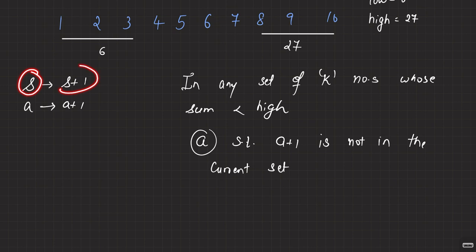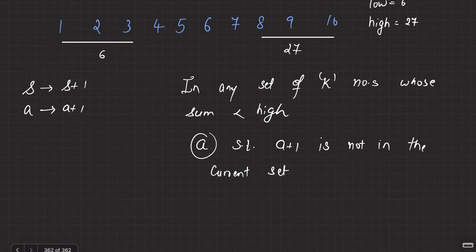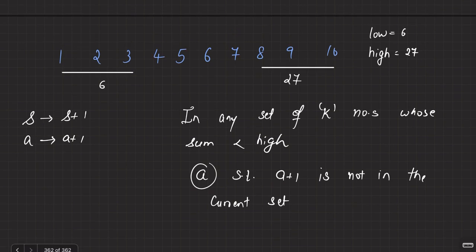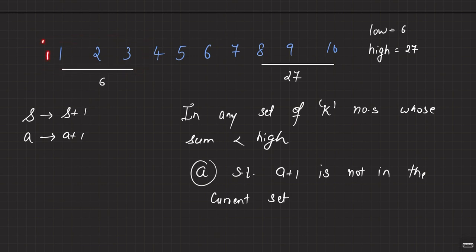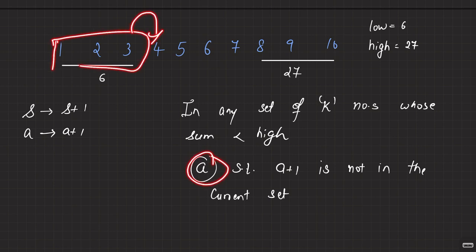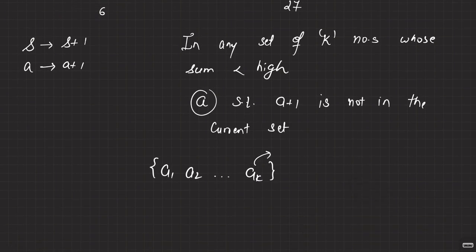If s is not high, and I want to go from s to s+1 by replacing a with a+1, what needs to hold true is: in any set of k numbers whose sum is less than high, I need to find element a such that a+1 is not in the current set. If you start off with the smallest possible sum — the set {1, 2, 3, ...} — finding this a is very easy: it's simply the maximal element of the set.